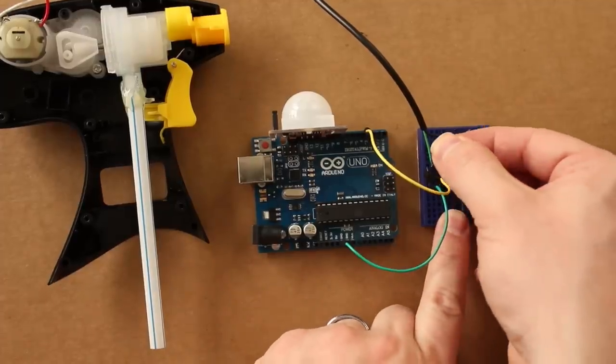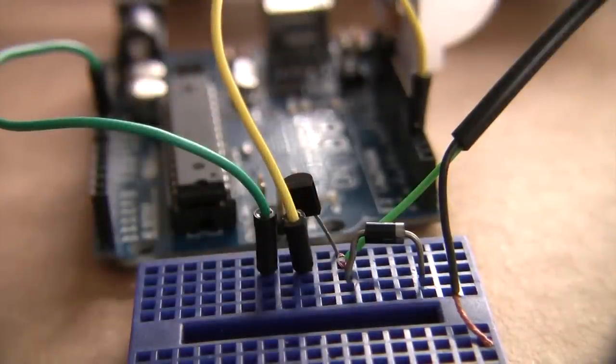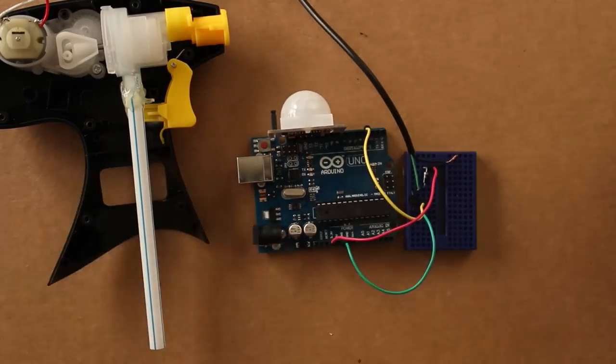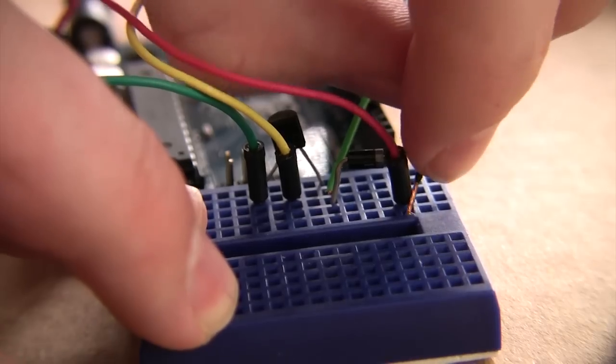Then connect a diode to it with the stripe facing away. Now from the other end of the diode, run a wire to the 5V pin on the Arduino, and another wire to the other end of the motor.